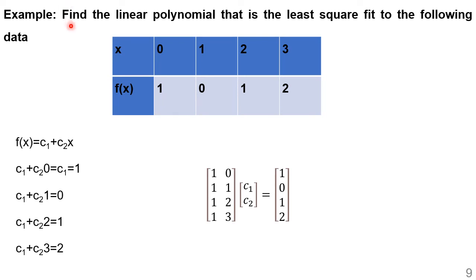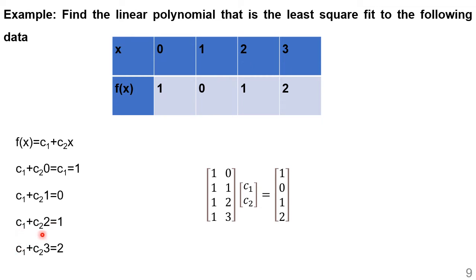For the third example, we find the linear polynomial (least square fit) to the data. We use a straight line f(x) = c1 + c2·x. Substituting the data points: f(0)=c1=1, f(1)=c1+c2=0, f(2)=c1+2c2=1, f(3)=c1+3c2=2.